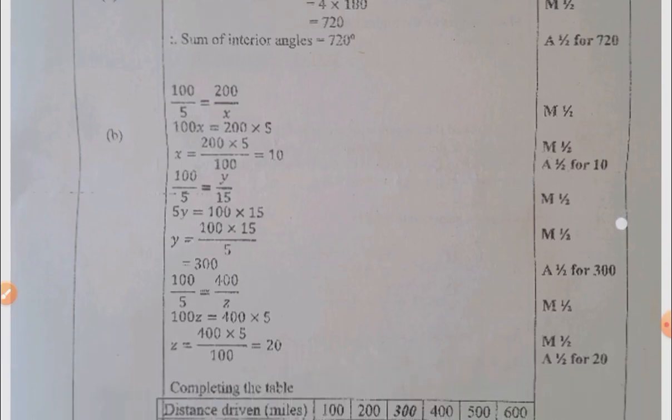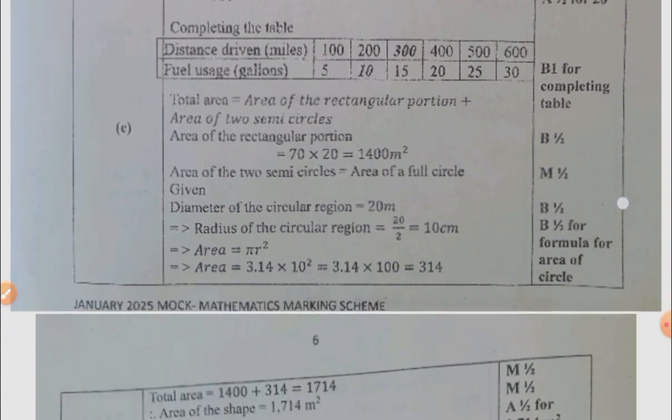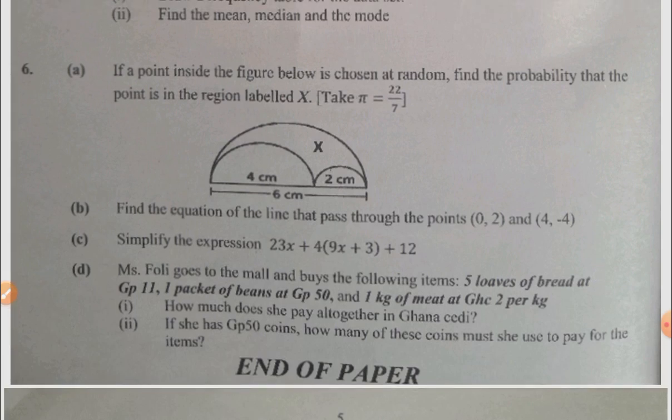Question five, then D has to do with statistics. Question six, plane figures. And then B has to do with coordinates, geometry, C algebraic expression. Then your D has to do with a word problem.